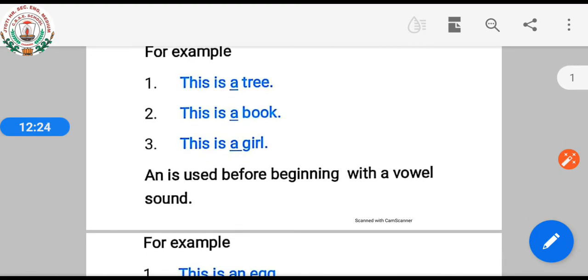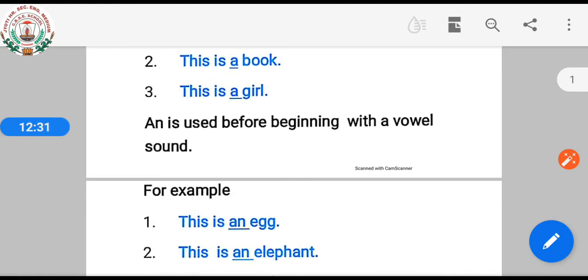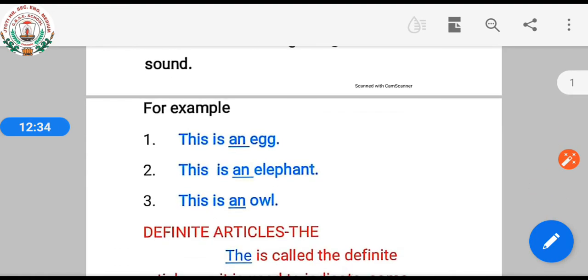'An' is used before words beginning with a vowel sound. For example, this is an egg, this is an elephant, this is an owl.